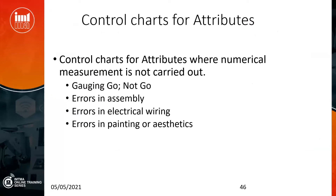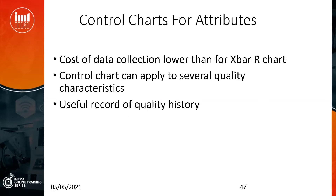Control charts for attributes — there are several charts for different purposes. But first we need to understand what attribute data is. Attribute data is data which is not numerical — there is no number, but it can be OK or not OK, go or not go. Assembly OK or not OK. Electrical wiring OK or not OK. Aesthetics and painting OK or not OK. So these are the kinds of things we call attributes. Attribute charts are similar to the charts we have already seen, but there is some difference in the kind of data collection, because now you are not collecting numerical data but collecting defects or non-conformities in the products.